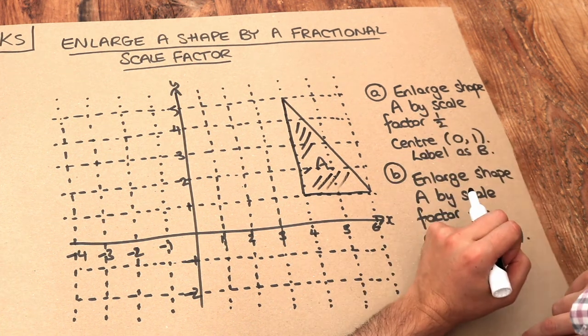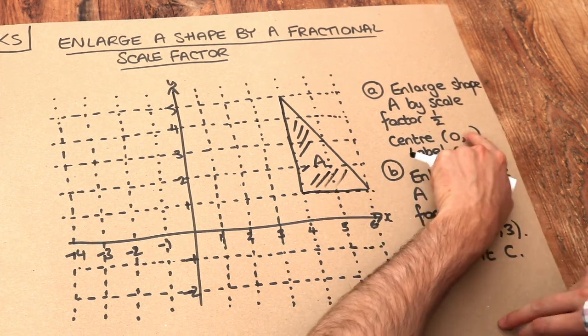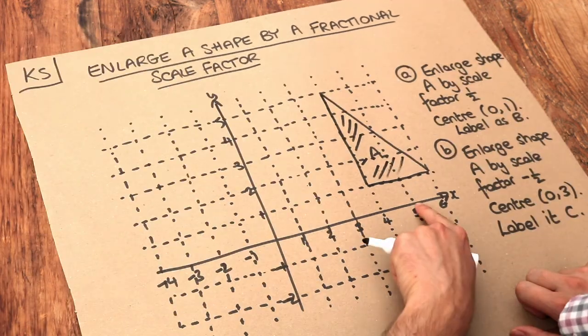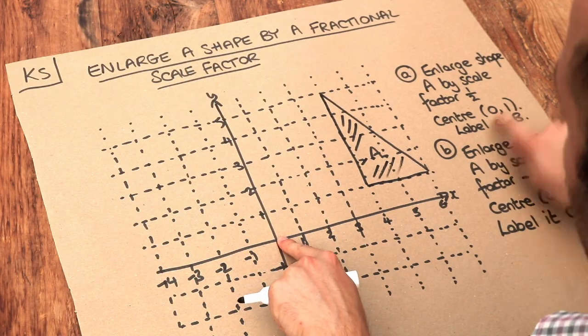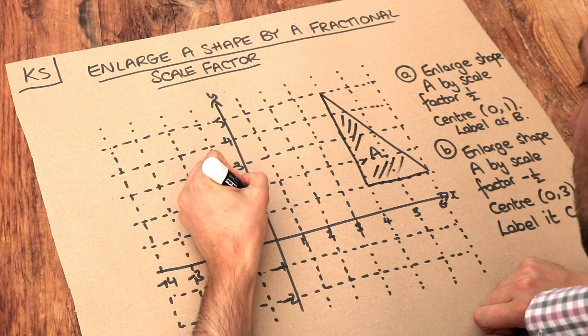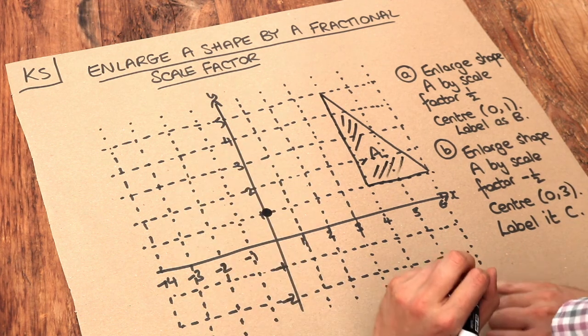I always start with plotting the centre of enlargement, so it's (0,1) - 0 along the x-axis and 1 up the y-axis. This is our centre of enlargement.